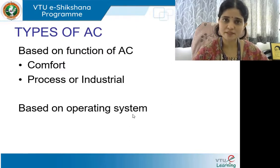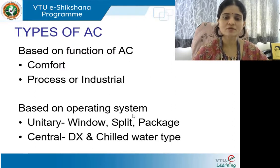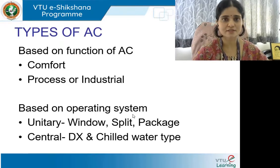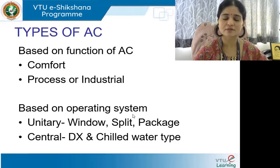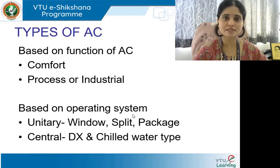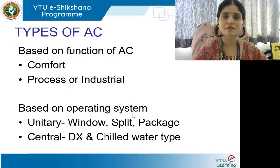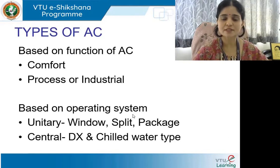Based on operating system, we have two categories: unitary AC and central AC. Unitary AC refers to small equipment, small scale — for example, window AC, split AC, package AC. Central AC is for large installations, large building areas, big built-up zones, and we have two types in that: direct or DX system, and chilled water system.